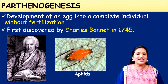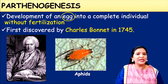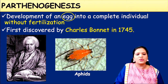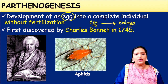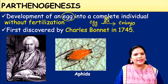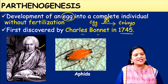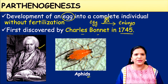The exact definition: Parthenogenesis is the development of an egg — no sperm — into a complete individual without fertilization, that is, without the involvement of sperm. The egg develops into an embryo without fertilization. This was first discovered by Charles Bonnet in 1745 in the small bug aphids.